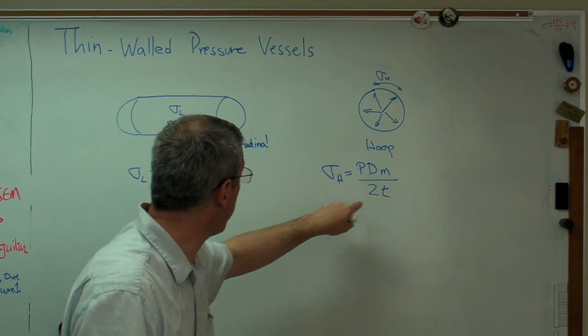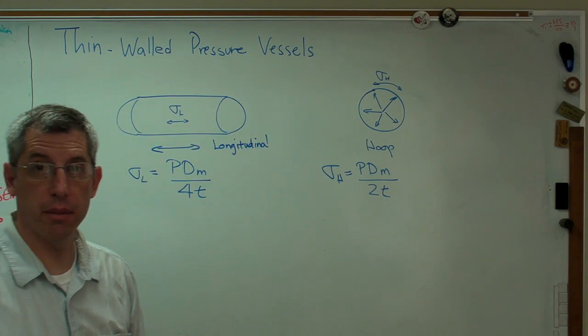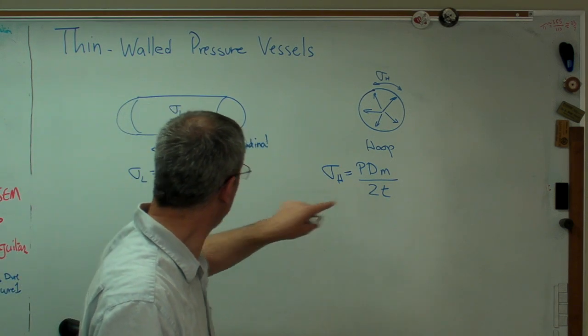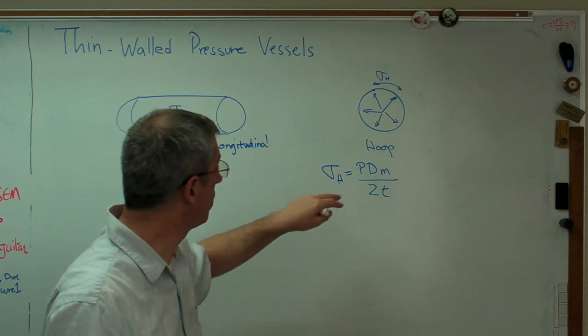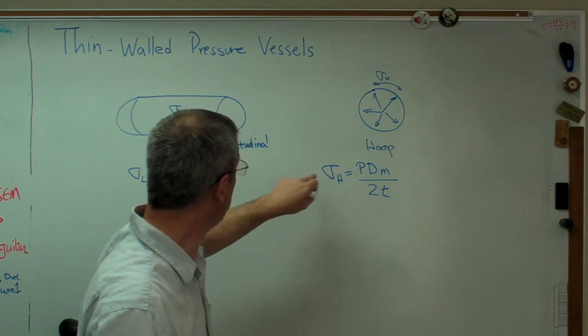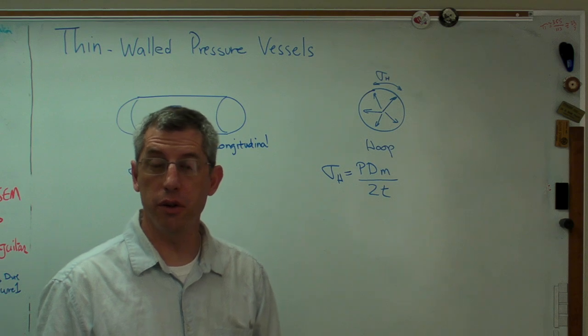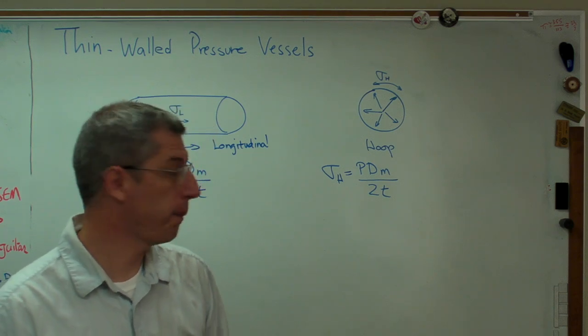All right? Now, this is really important. That number in the denominator makes a big, big difference because that number is smaller than that number by a factor of 2. That means hoop stress is bigger than longitudinal stress by a factor of 2.